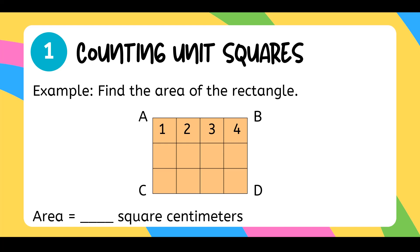Let's find out how many square centimeters are there in this rectangle. Counting: 1, 2, 3, 4, 5, 6, 7, 8, 9, 10, 11, and 12. So there are 12 square centimeters in this rectangle A, B, C, and D.